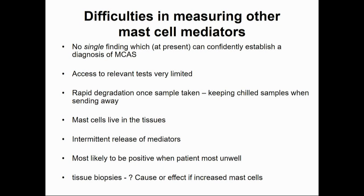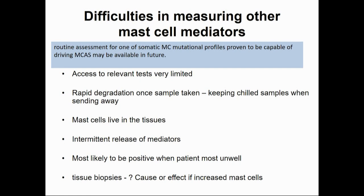Arguments against using other mast cell mediators include: no single finding can confidently establish a diagnosis; access to relevant tests is very limited and expensive; there's rapid degradation of these substances once out of the body; mast cells live in tissues and are not easily accessible; and mediators are released intermittently, so the sample may not be taken at the right time — though they're more likely to be positive when the patient's most unwell. Hopefully in the future, routine assessment for mutational profiles will show what process is driving mast cell activation.